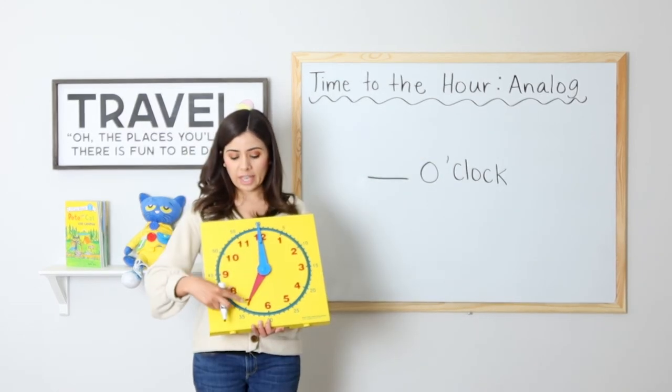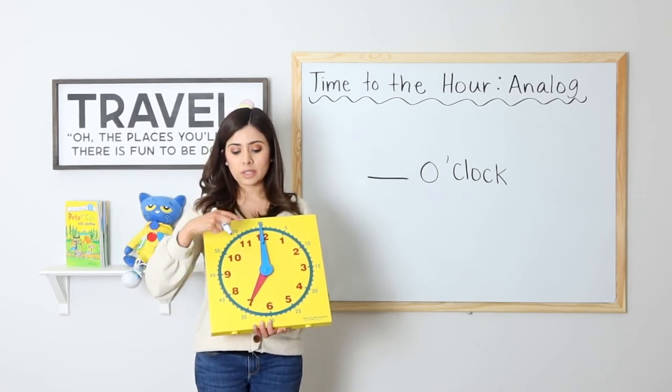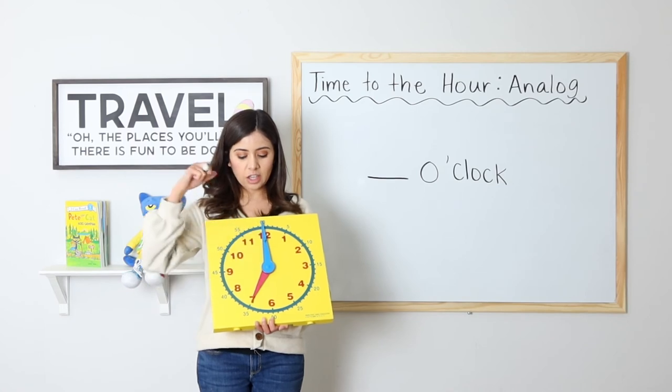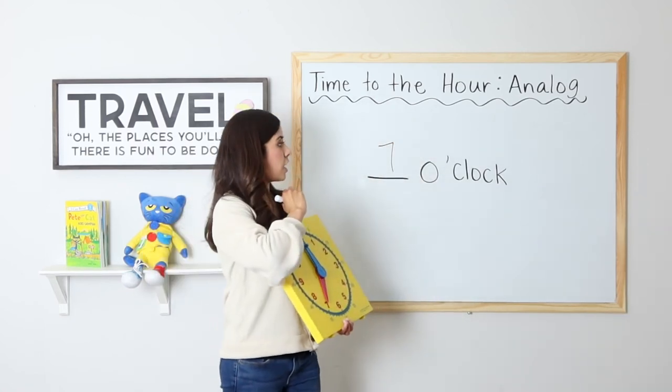For this example, we have the hour hand pointing at the seven and the minute hand pointing at the 12. So it is seven o'clock. Seven o'clock. Very good.